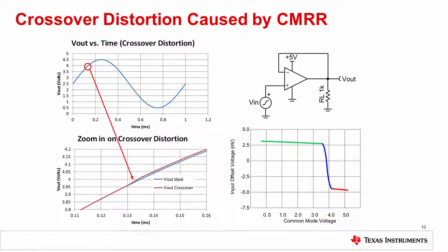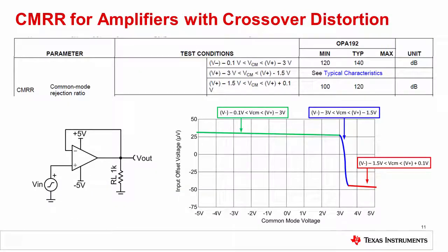This generates a type of distortion called input crossover distortion. Since common mode rejection is determined by looking at the change in offset voltage over common mode voltage, this jump in offset will also affect CMRR. For this reason, CMRR specifications are often separated into different common mode voltage ranges to show the performance of each region.